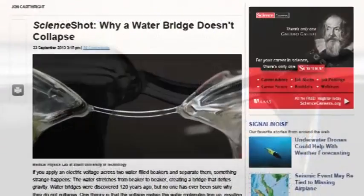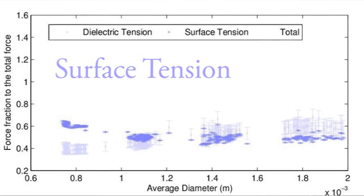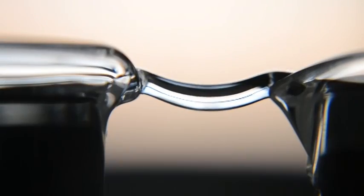The outcome was quite impressive. Finally we found the correct explanation and this was a breakthrough highlighted in science magazines news. We showed it is classical forces, the sum of surface tension and the electric tension, that hold the bridge against gravity.